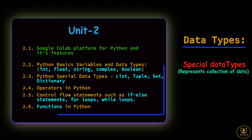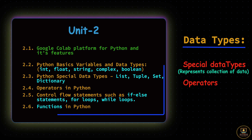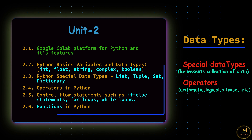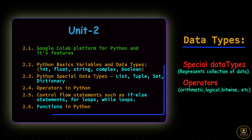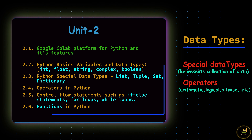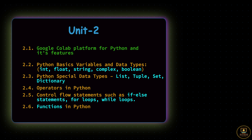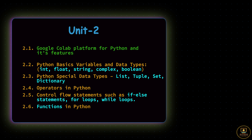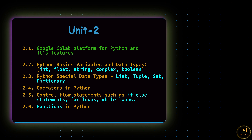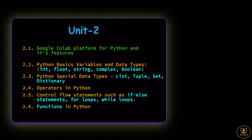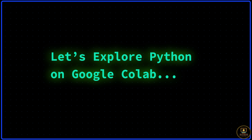Python also has string and boolean data types, and special data types: list, tuple, set, and dictionary. These special data types store collections of values and are used very frequently in machine learning code. We'll also explore operators such as arithmetic, logical, and bitwise operators, as well as control flow statements like if, for loops, and while loops. Finally, we'll explore functions — reusable code blocks that we write once and can use any number of times.